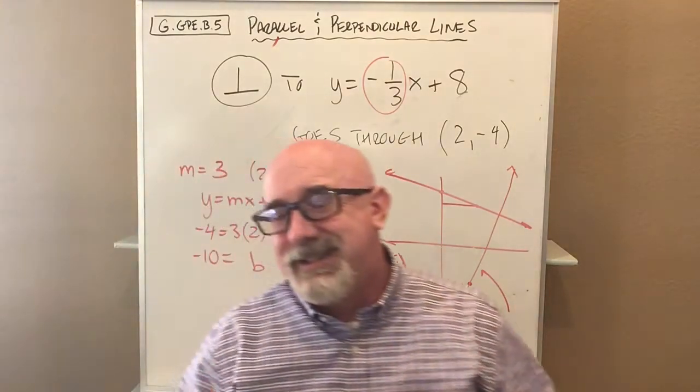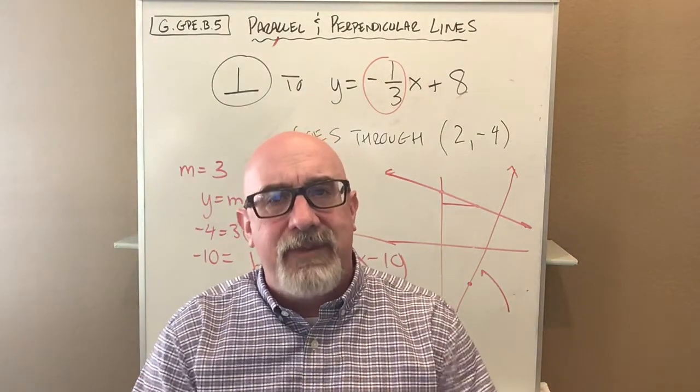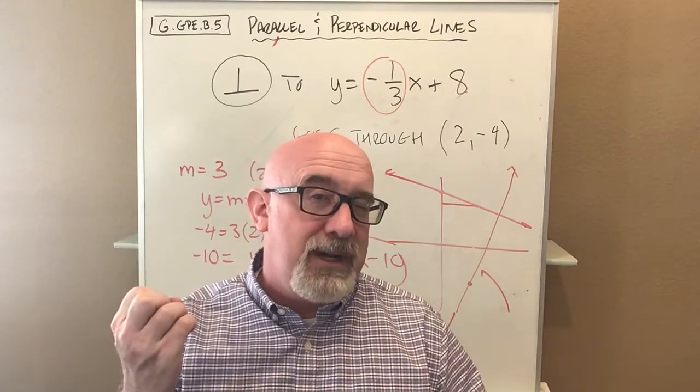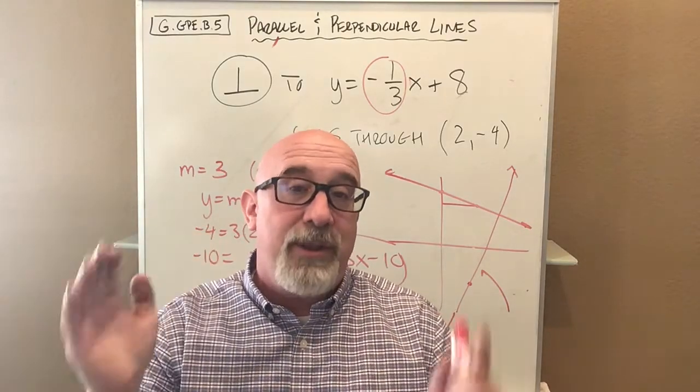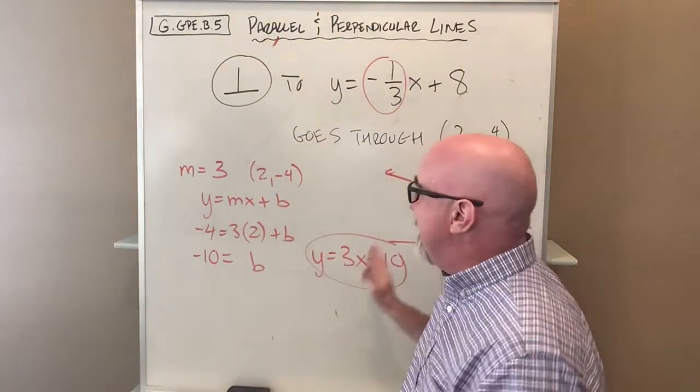This is a review of finding an equation of a line given some information. We're pulling two characteristics. With parallel lines, they must have the same slope. With perpendicular lines, they must be negative reciprocals.